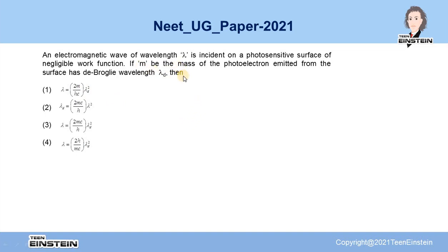This problem actually has two concepts within it: the concept of photoelectric effect and de Broglie's hypothesis or dual nature of the electron. We will be using de Broglie's hypothesis as well as Einstein's photoelectric equation to solve this problem.